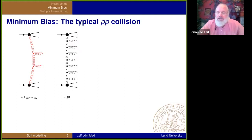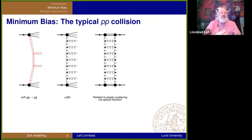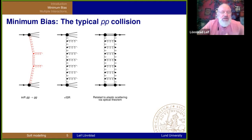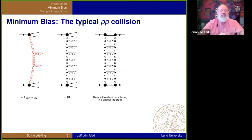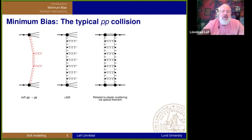We have learned you need to add on initial state radiation and final state radiation — I'm mainly going to worry about the initial state radiation here. Any such cross-section is related to the elastic scattering via the optical theorem. You basically have a bra state and a ket state and you put them together. So the amplitude for elastic scattering is related to the cross-section of what we call non-diffractive scattering.